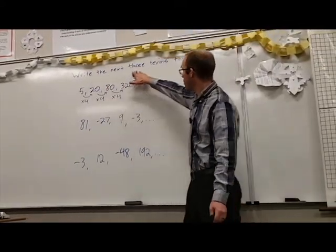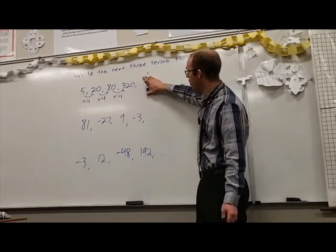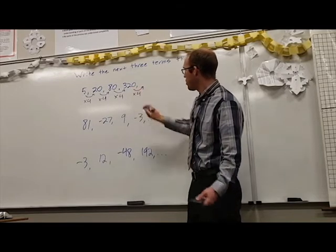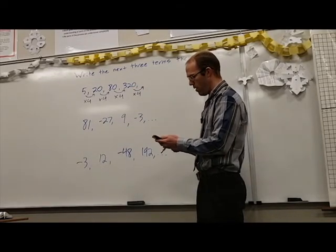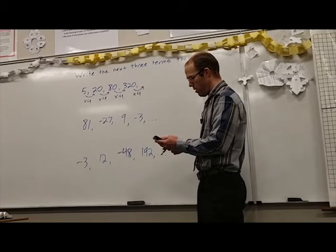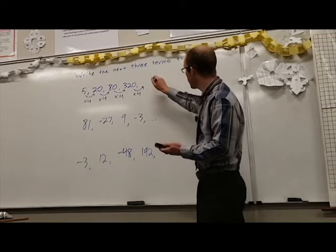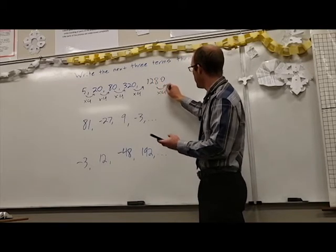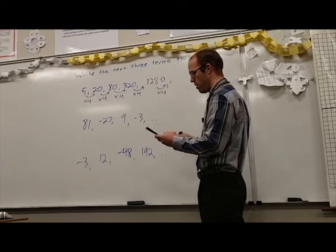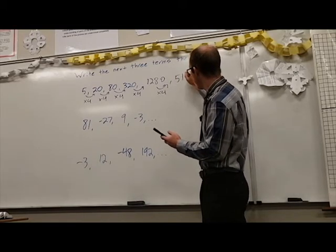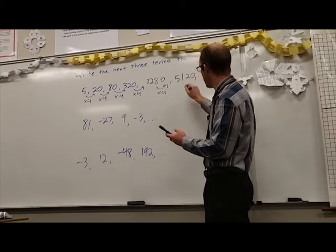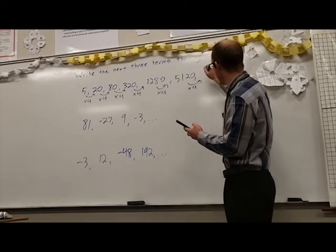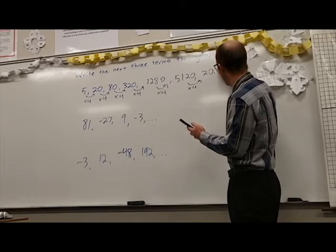Now our first task is to write the next three terms and so we're going to use that pattern and continue by multiplying by 4. So 320 times 4 is 1280. We're going to multiply that by 4 again to get our next term which is 5,120 and multiply that by 4 one more time to get 20,480.